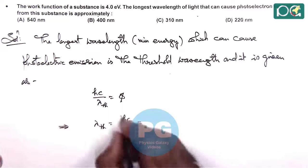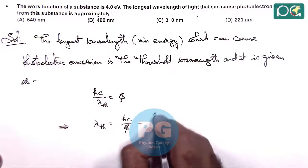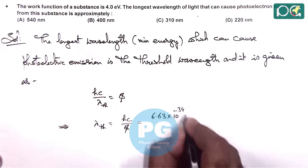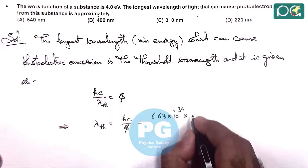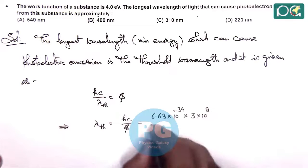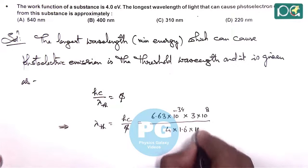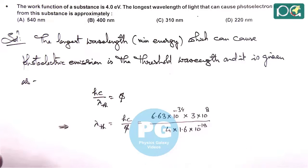Here we can numerically substitute the values. h is Planck's constant 6.63 into 10 to the power minus 34, speed of light is 3 into 10 to the power 8 divided by phi is 4 electron volt, which is 4 into 1.6 into 10 to the power minus 19. And here we know hc by e, this is a constant.